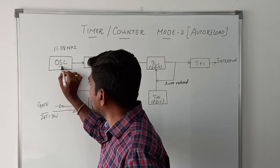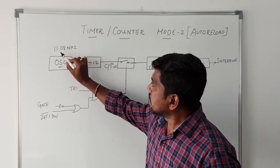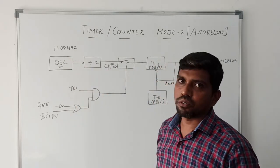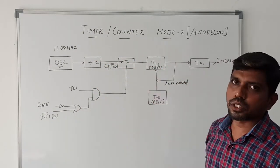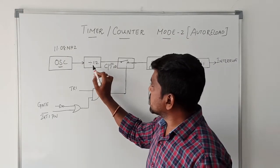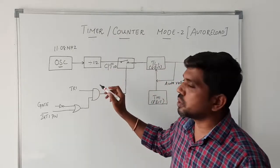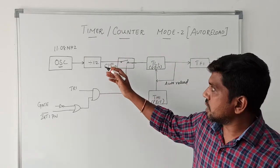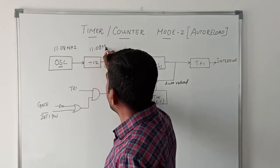In 8051 microcontroller, the oscillator block generates 11.08 megahertz of frequency. This frequency does not support triggering the timer register one. So here we are using one frequency divider block. This block is mainly used to divide the frequency, 11.08 megahertz by 12.